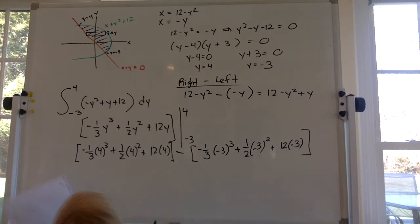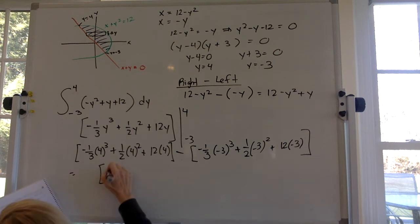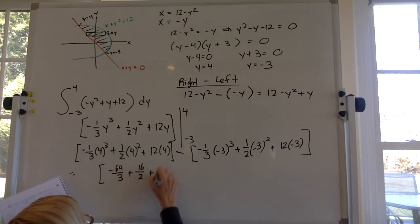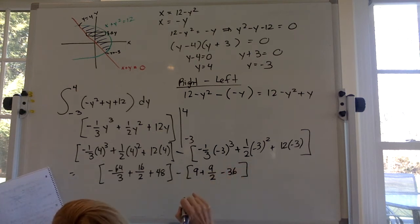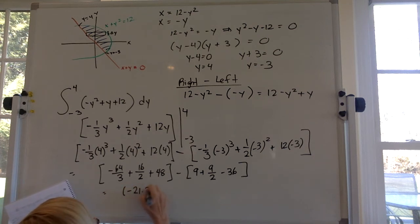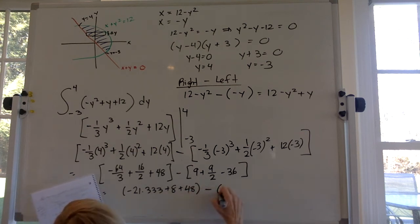So what the heck did I get? I got equals negative 64 over 3 plus 16 over 2 plus 48 minus 9 plus 9 halves, watch your signs, minus 36. So when I did this all out decimals, I got negative 21.333 plus 8 plus 48 minus, and I think I just added those all together, I got minus 22.5.